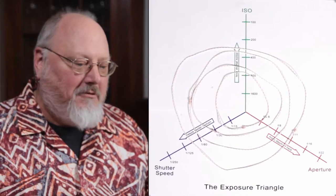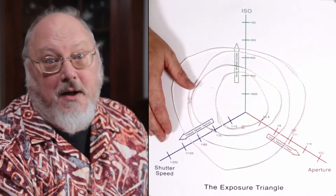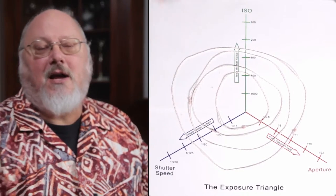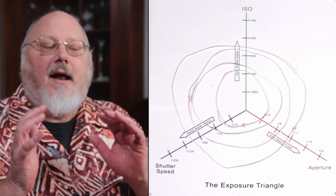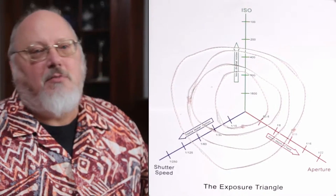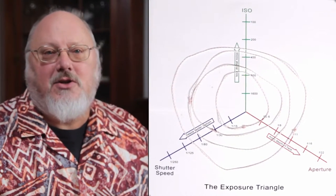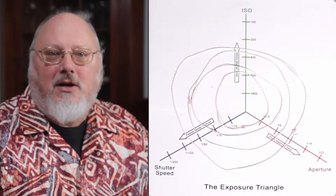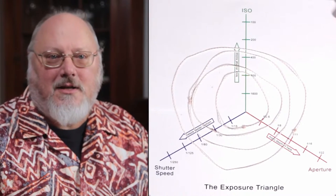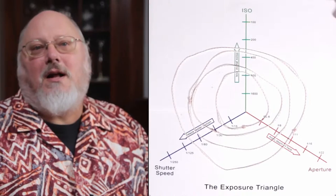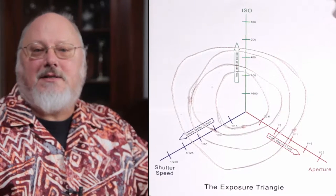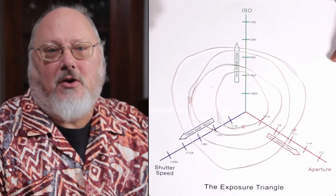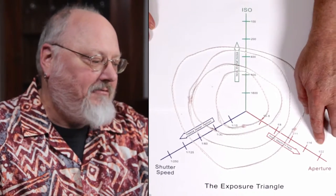So the advantage of a fast shutter speed is that you freeze motion, and that includes camera shake and subject motion. The advantage of a small aperture is that it increases your depth of field. Depth of field is the distance in front of and behind your subject that is also in focus. So if you want a lot of depth of field, which is often the case in a landscape photograph, then you want to have a small aperture, which is represented with a large F number.